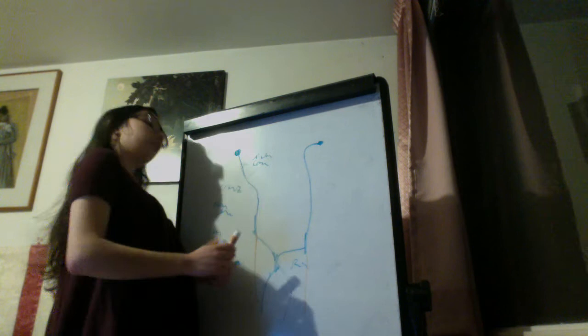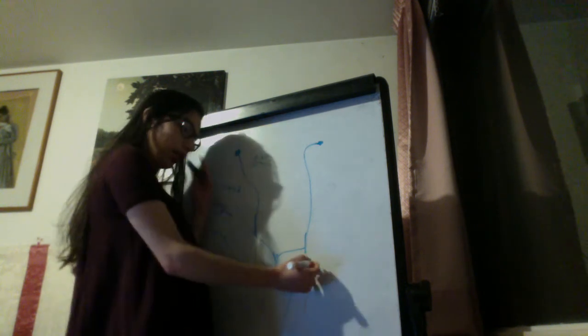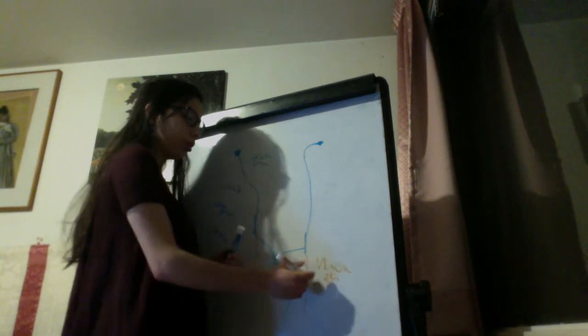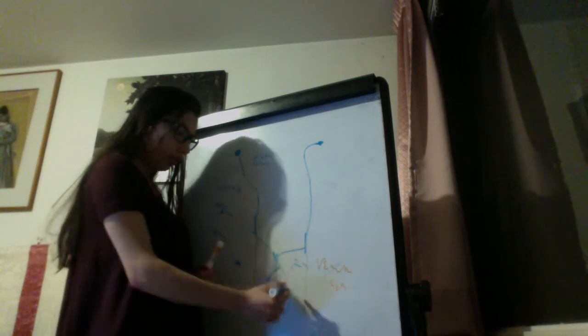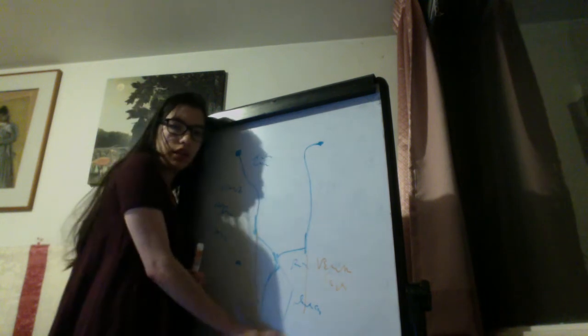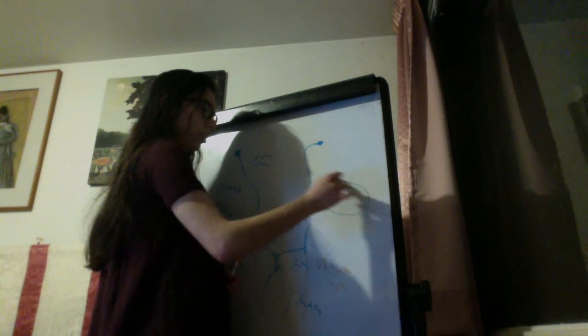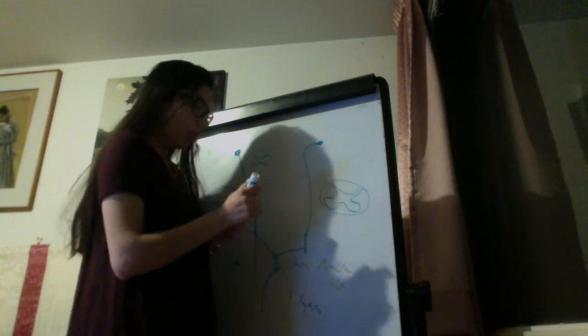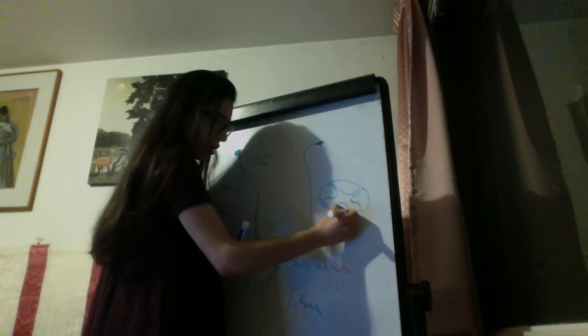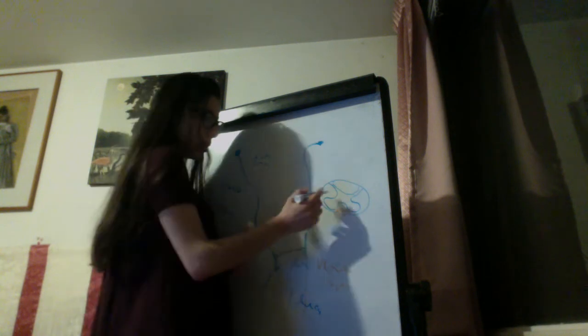So now we have two tracts descending from the medulla. The tract that does not cross is called the ventral corticospinal tract. The tract that crosses is called the lateral corticospinal tract. If we do a cross section of the spinal cord, we can see the posterior horn and anterior horn — the ventral corticospinal tract descends in the anterior funiculus, and the lateral corticospinal tract descends in the lateral funiculus.